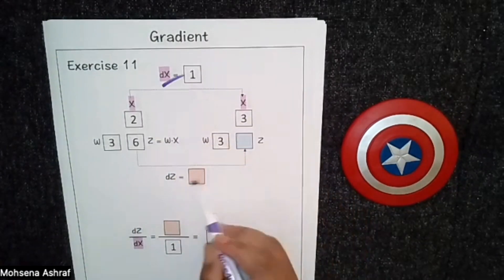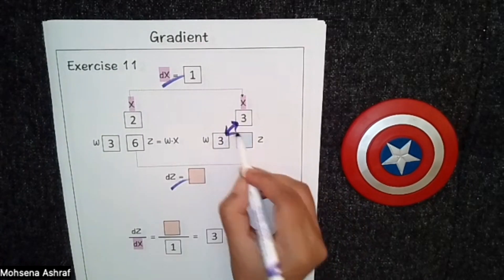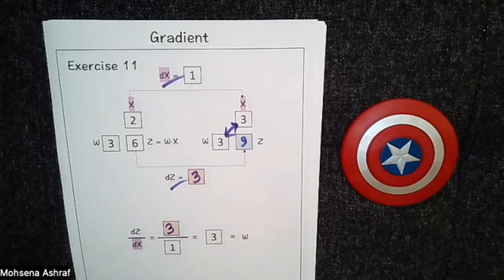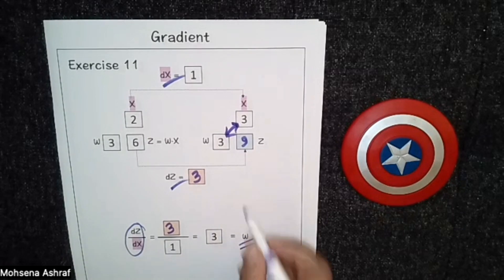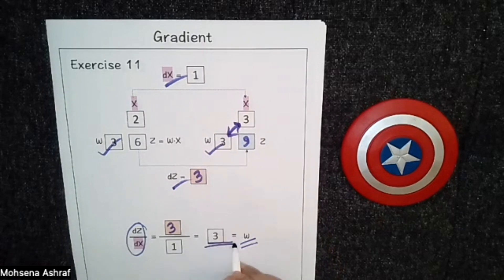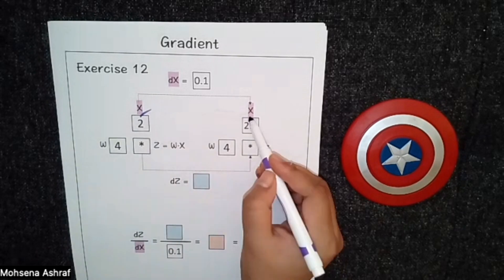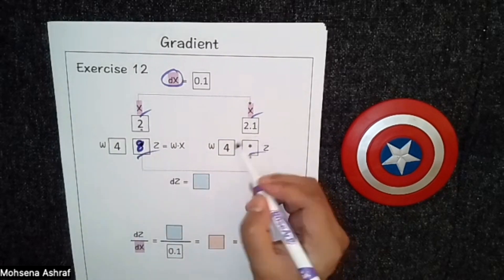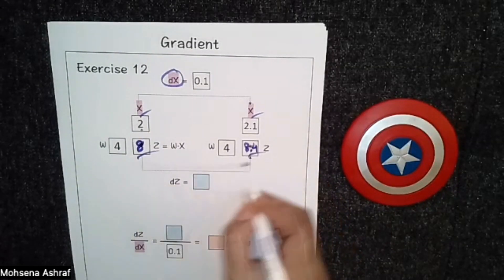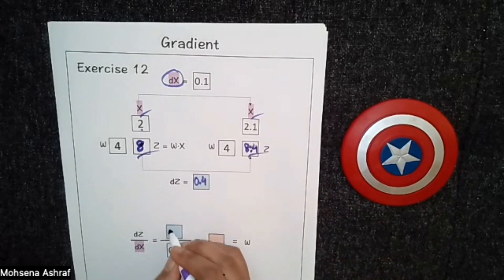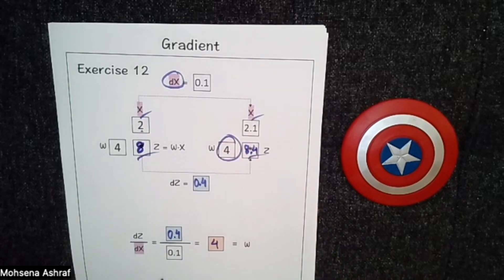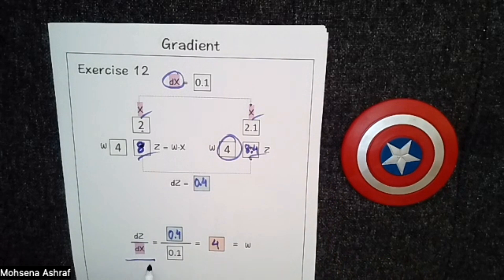Next exercise, again x is changing and z is changing. So 3 × 3 = 9, so from 6 to 9, dz = 3. We put dz = 3, and dz/dx gives us the third constant variable, which is 3. Next, x is changing from 2 to 2.1, so dx = 0.1. z = 4 × 2 = 8 and then 4 × 2.1 = 8.4. So dz = 0.4. And dz/dx = 0.4 by 0.1 = 4, which is the value of w.